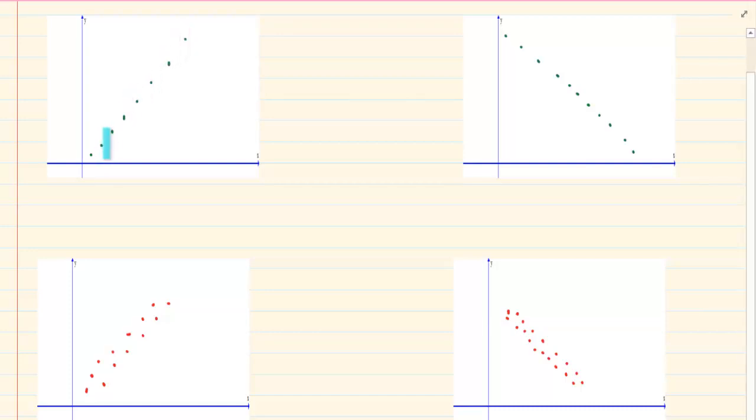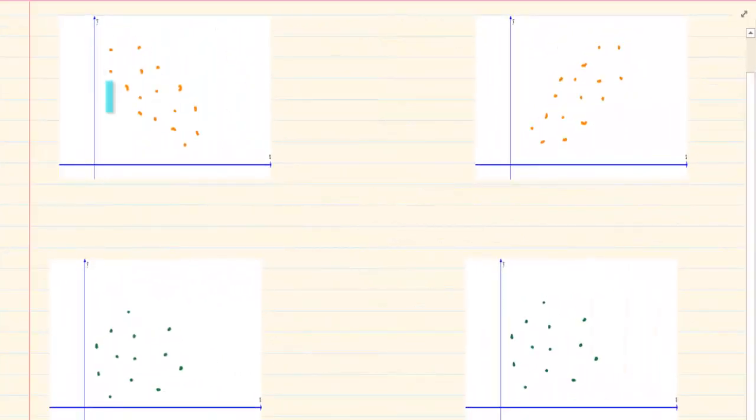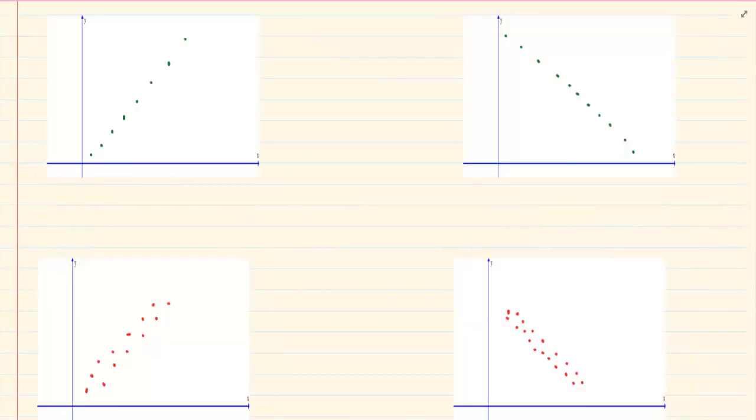Are they all together? Are they clustered? Are they more spread out? Is it a positive gradient? Is it a negative gradient?